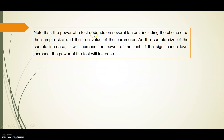The power of a test depends on several factors, including the choice of alpha, the sample size, and the true value of the parameter theta. As the sample size increases — for example, N equals 30 compared with N equals 90 — it will increase the power of the test. Similarly, if the significance level alpha increases, the power of the test will also increase.